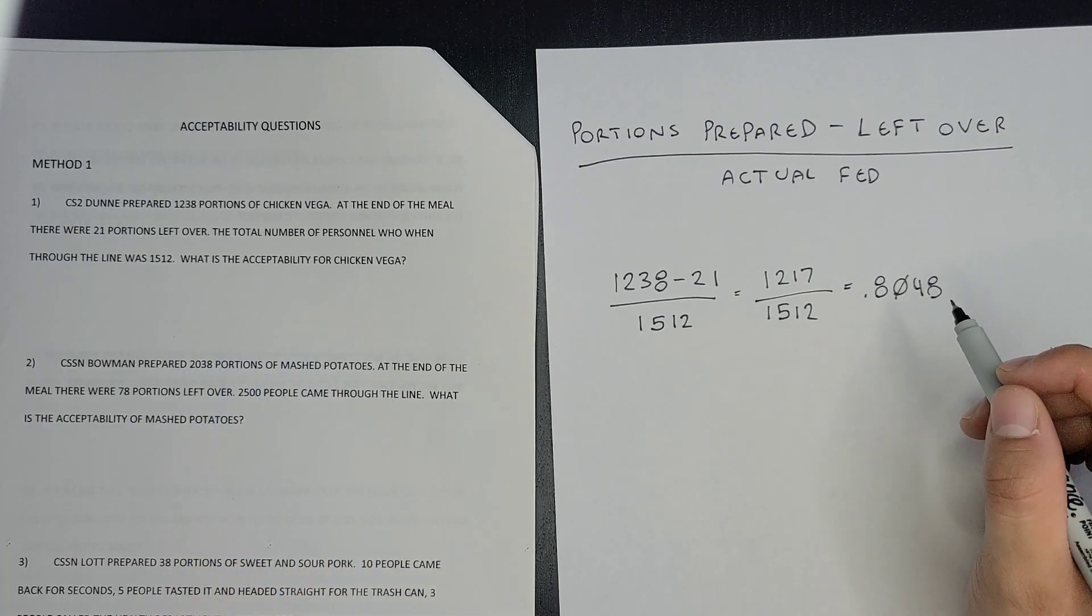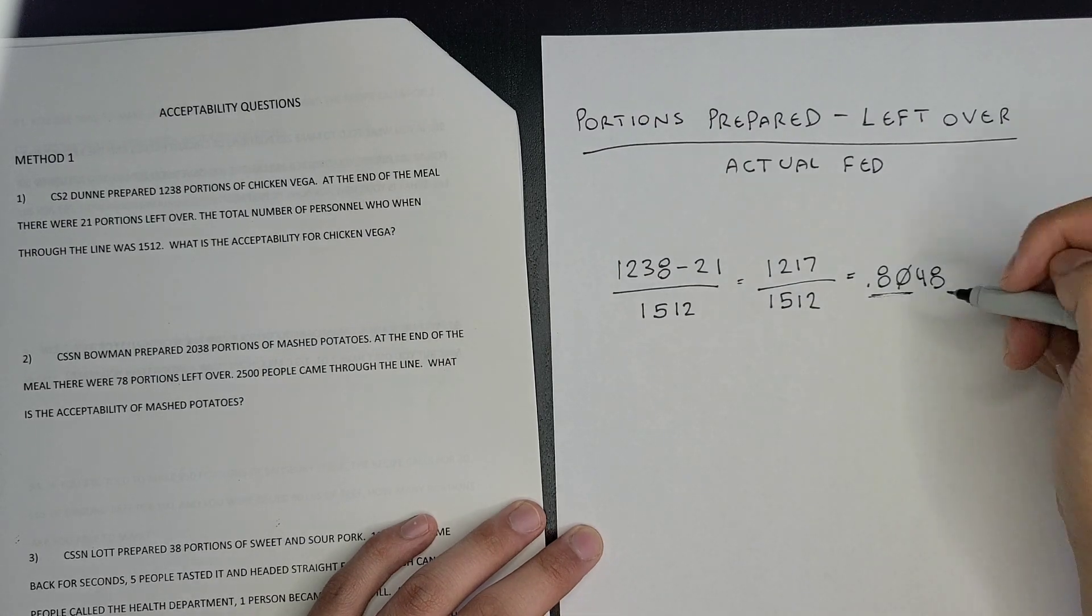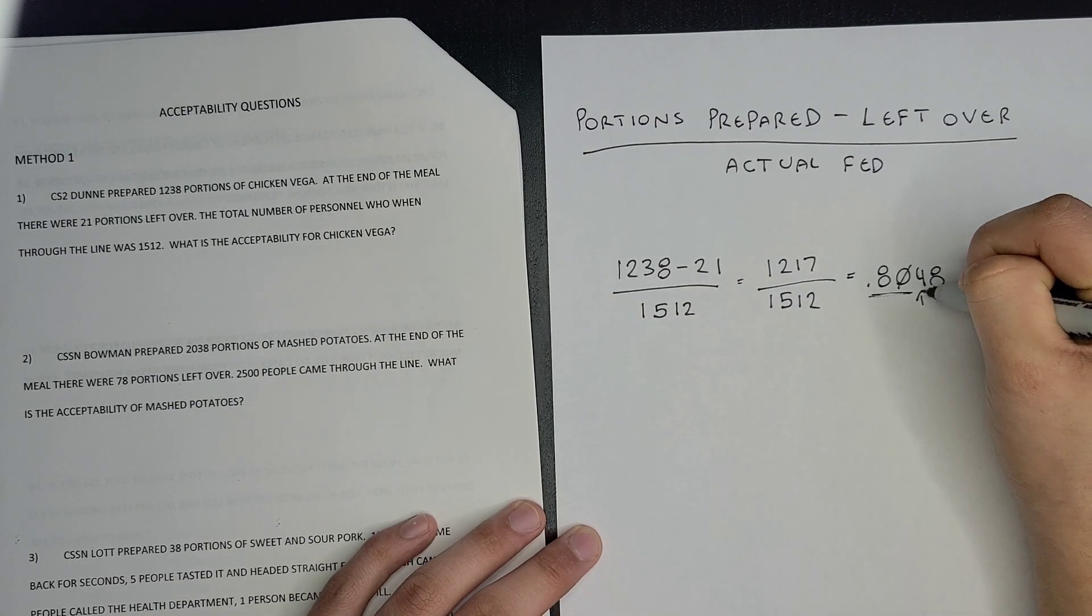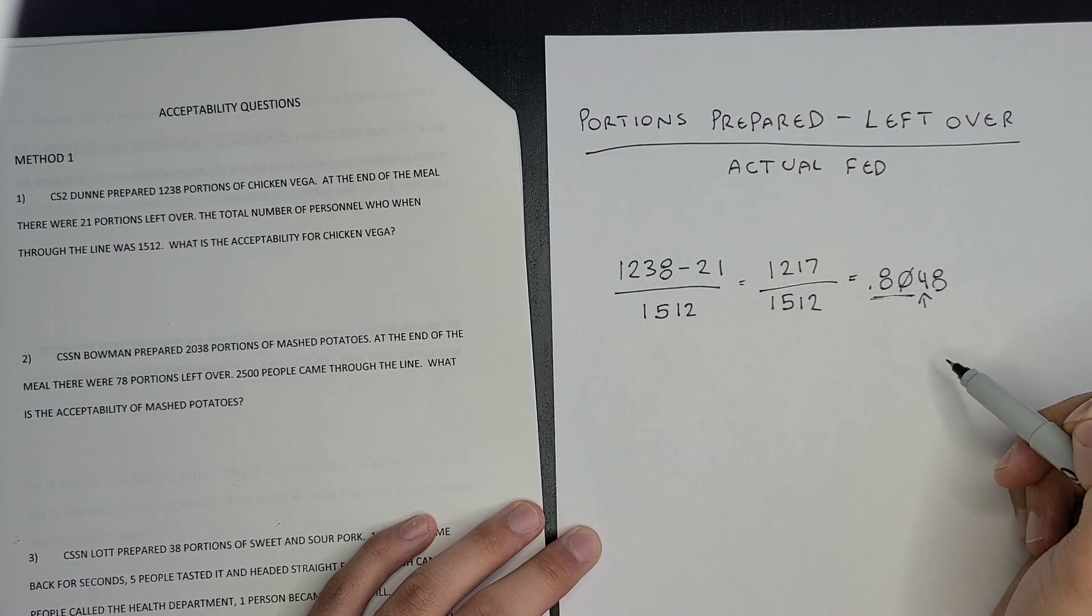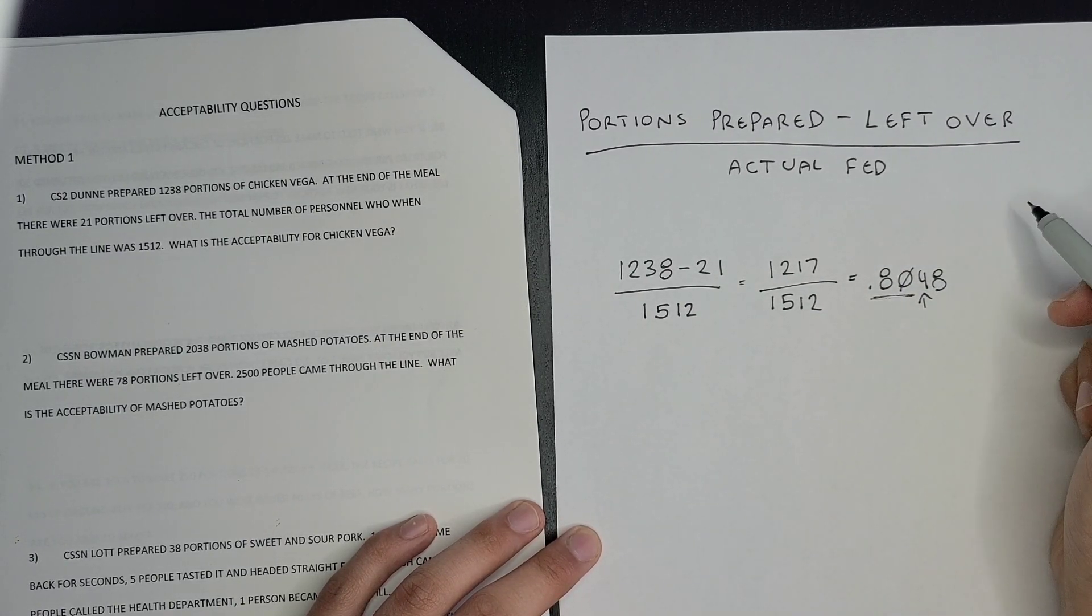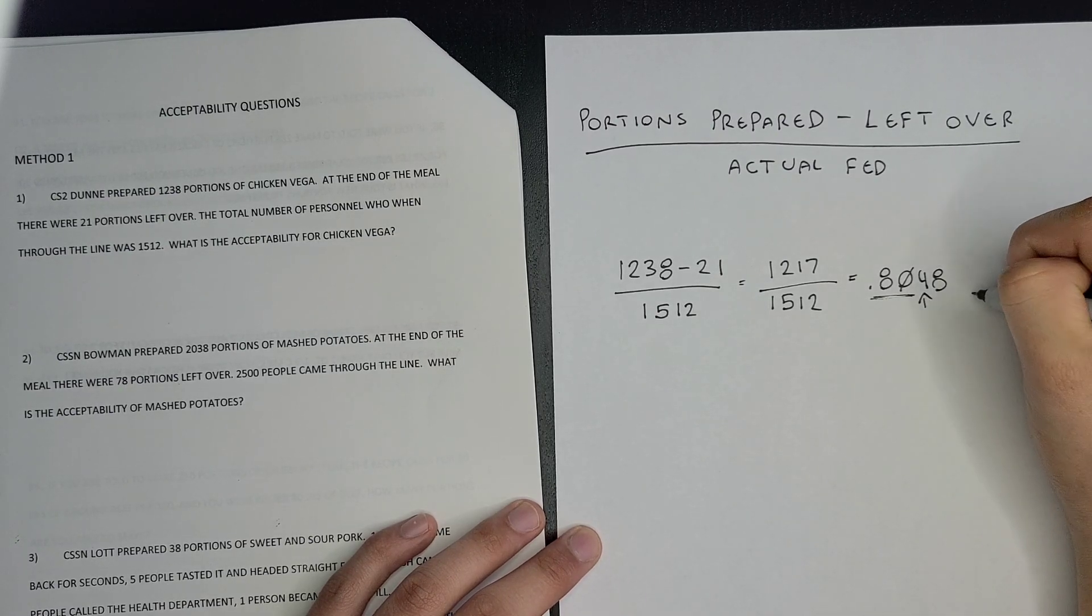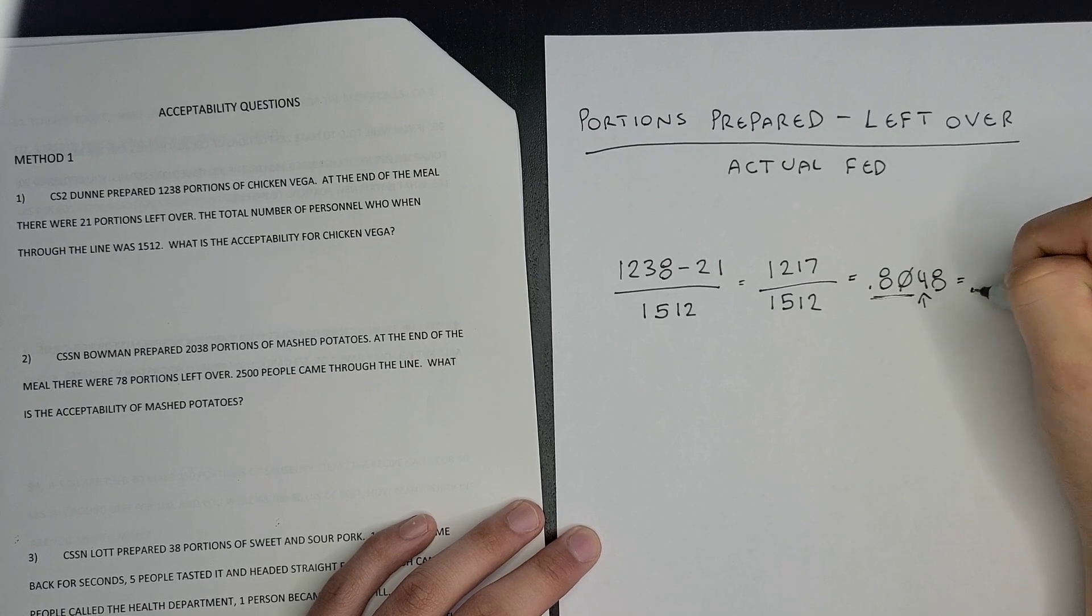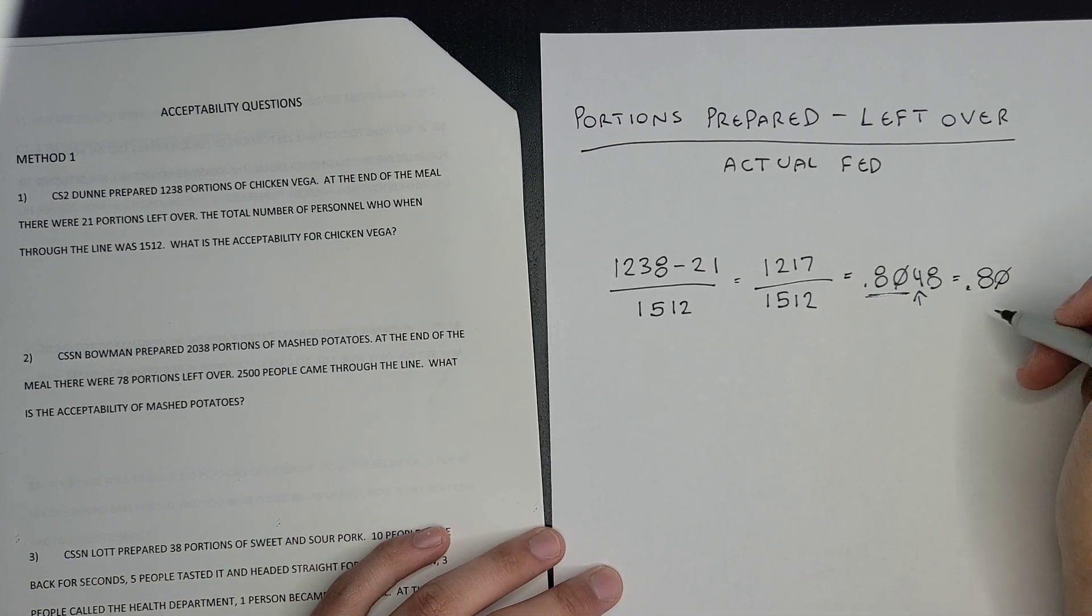It's going to give you a long bunch of numbers, but we're only going to round it up to the hundredths place, which is these two numbers. On this third number, if it's four or below, these two numbers stay the same. But if it's five or above, then we round it up. Since it's four or below, it stays at 0.80.